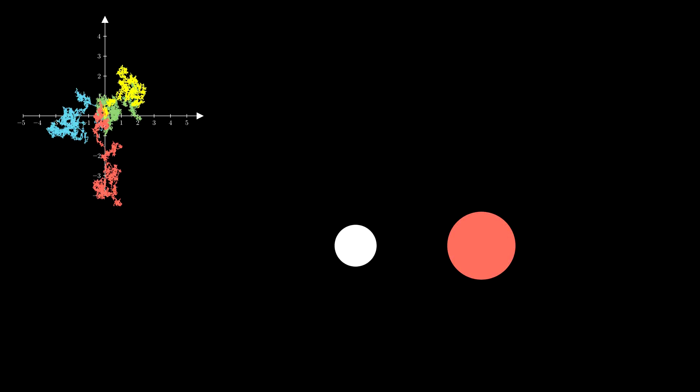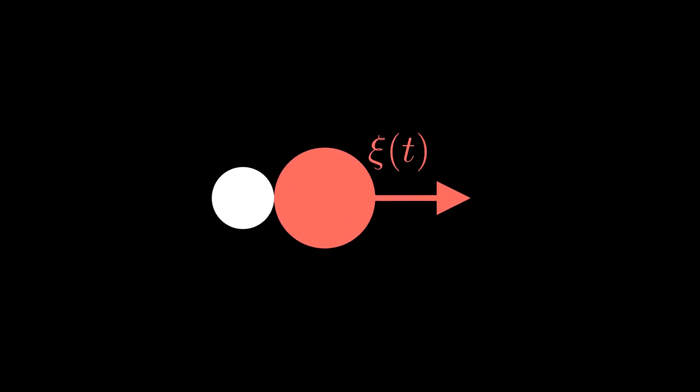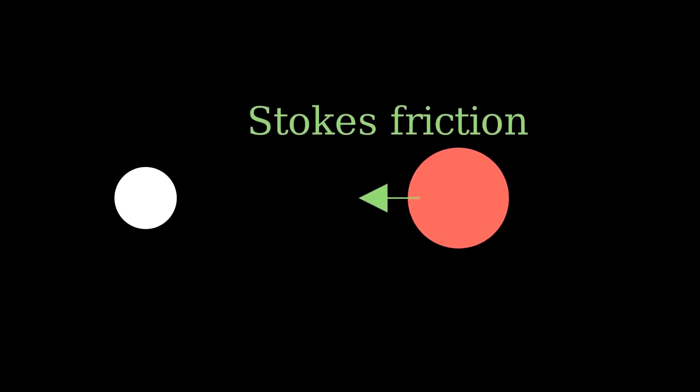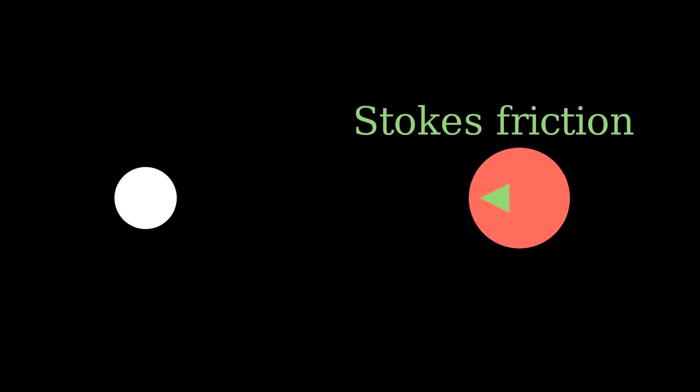He assumed that the particle was subject to two different forces: friction, which he modeled as Stokes's law, together with the fluctuating force T of t, product of these tiny random forces that the microscopic particles in the fluid exert on the pollen grains, or the red ball in our cool simulation.